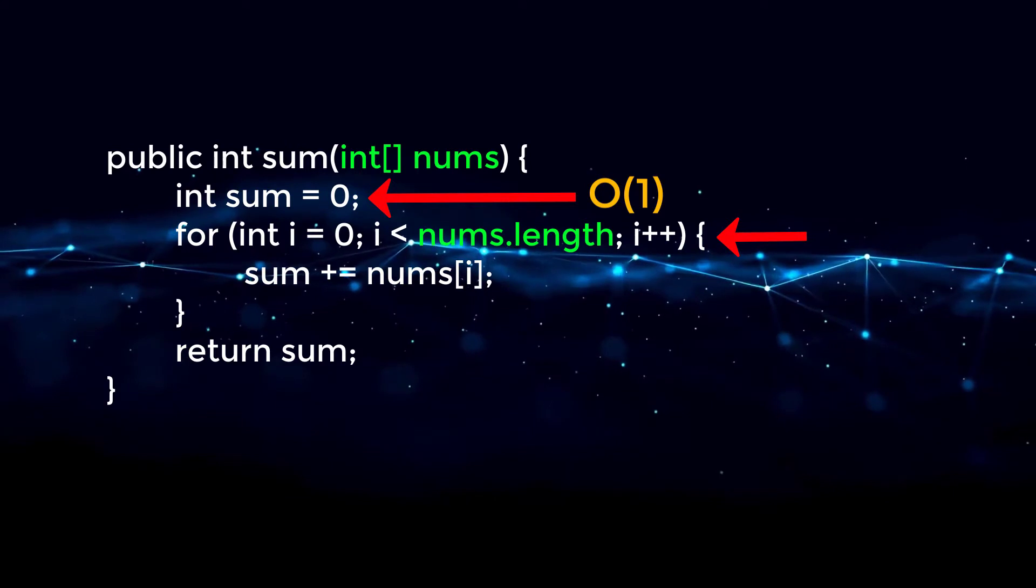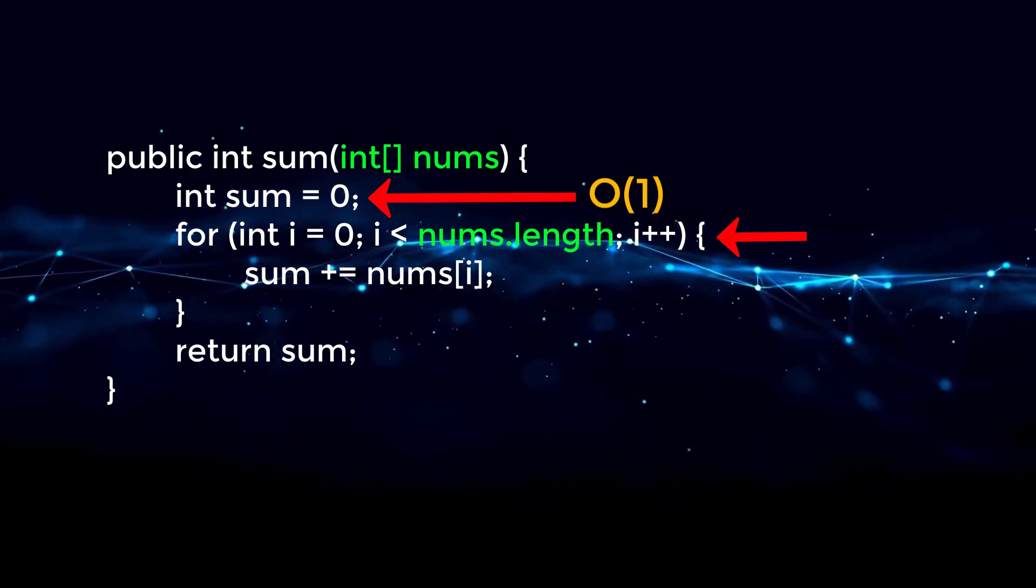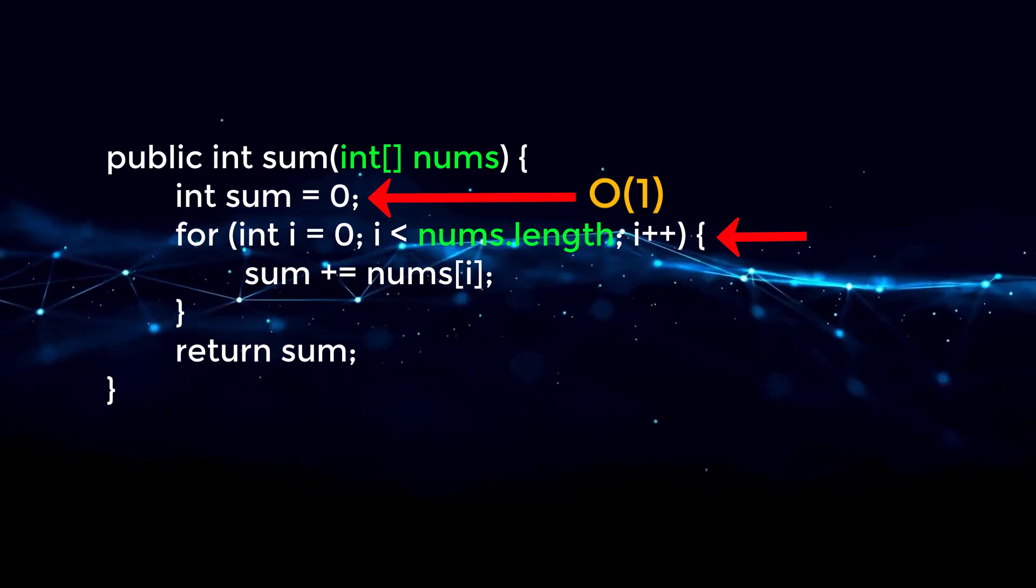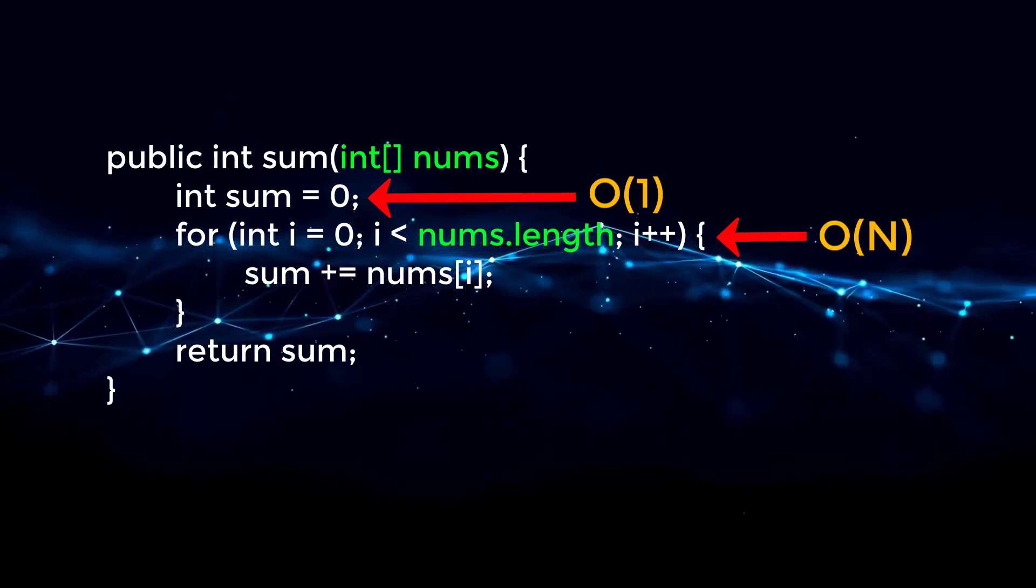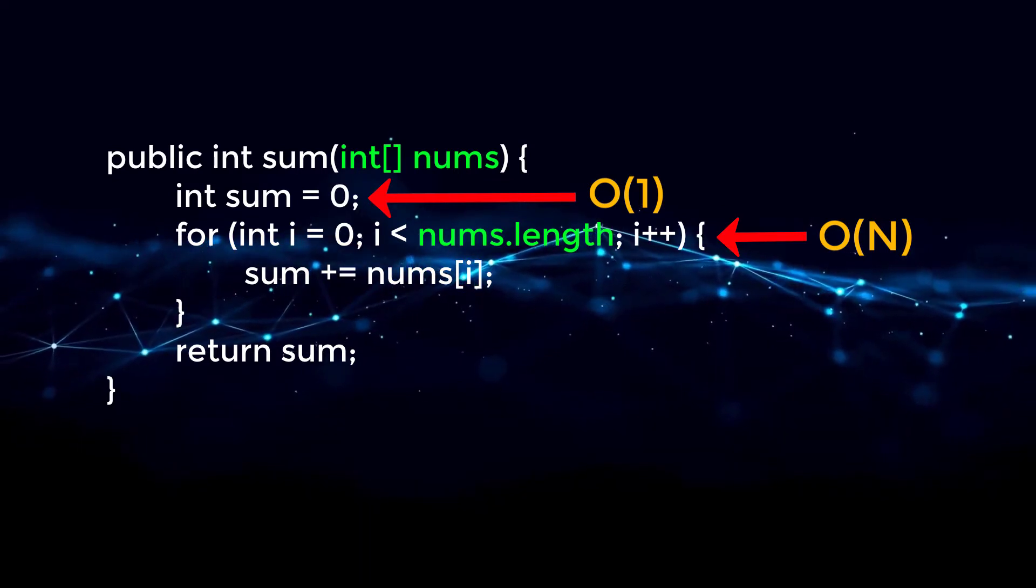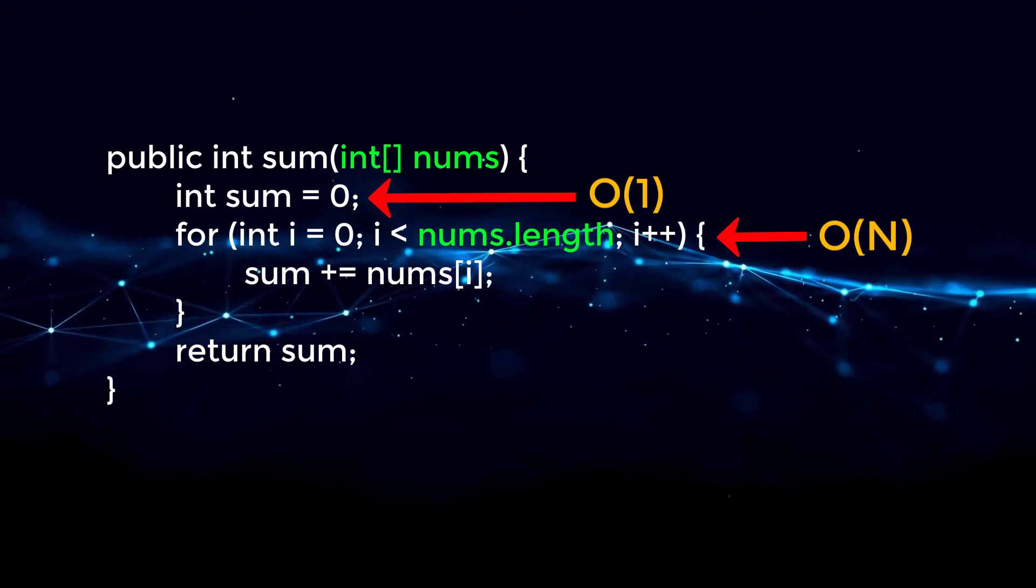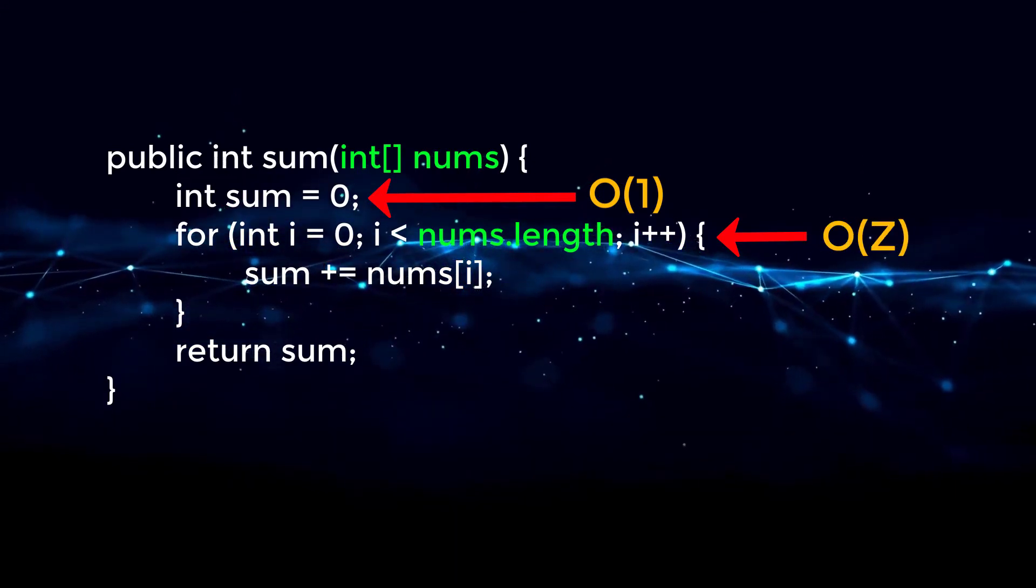So what this means is that this line is directly affected by the input to our function. So what we can say here is that this line is running in Big O of n time, where n is the length of our input array. And keep in mind, we can identify n as whatever character or symbol that we want. We could use K, M, Z, it's really up to us.